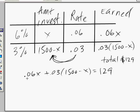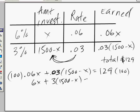Now, I don't know about you, but I'm not too happy with these decimal points here. So I'm going to multiply both sides by 100 to get rid of those decimals. So now it's just 6x plus 3 times 1500 minus x equals 12,900.